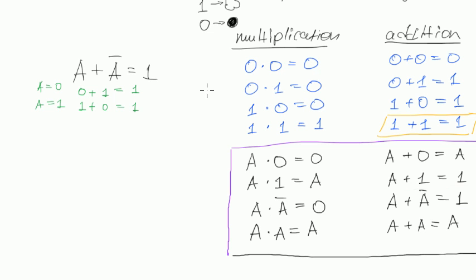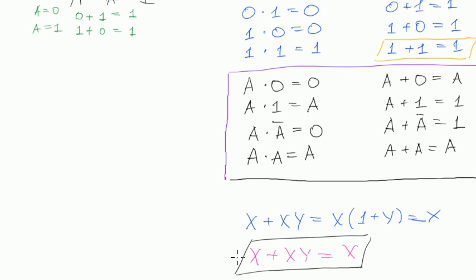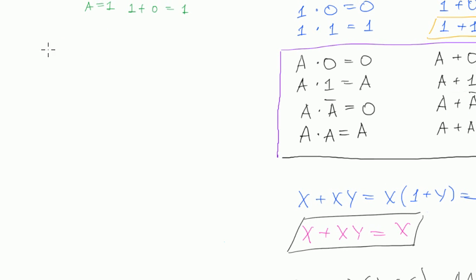You should remember that. But that's actually a very useful idea — to put in all the possible values instead of variables. And it can be used not only for this simple expression, but for more complex expressions. Let's do the same thing and verify the expression for our first absorption rule. We have x plus xy, which equals x.